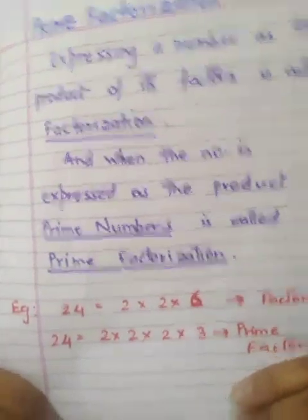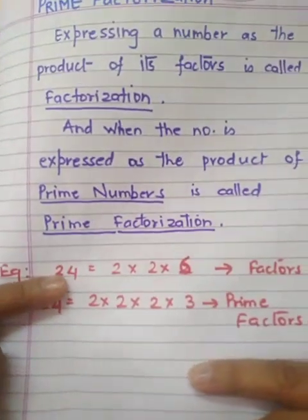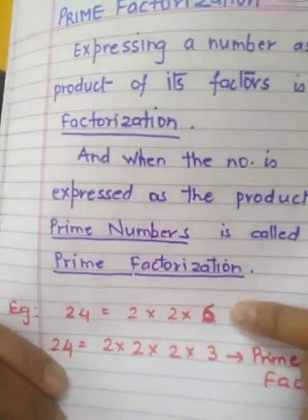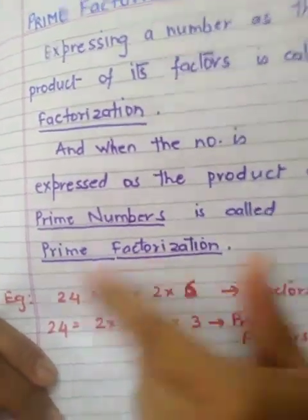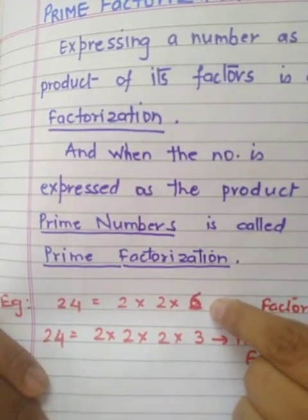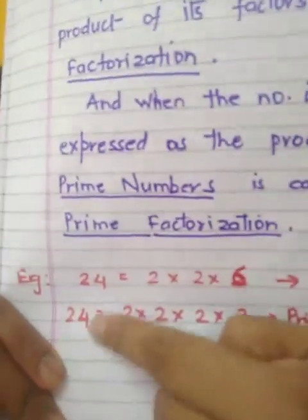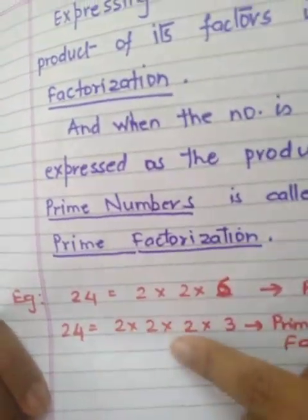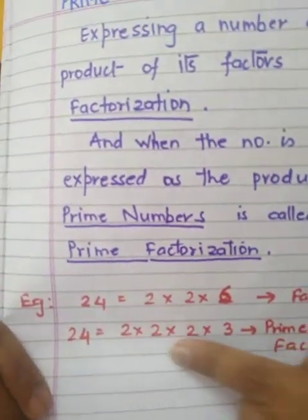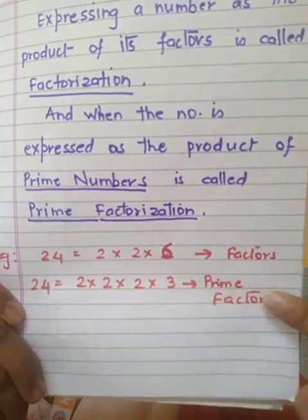Let me explain this with an example. I have taken the number 24. First, find out the factors of 24 — it can be 2 × 2 × 6. If we multiply these factors, we get 24. But this is not prime factorization because 6 is not a prime number. Now for the same number, if we write 2 × 2 × 2 × 3, we still get 24, but now all the factors are prime factors. So you can see the difference — these are factors and these are prime factors.